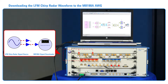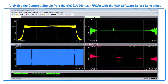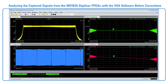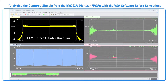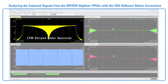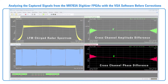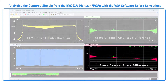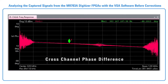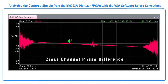An external RF power splitter is used to split the AWG output into two of the eight input channels of the M9703A Digitizer. This is the resulting signal measured with the Vector Signal Analysis, or VSA software, on the digitizer. The LFM Chirped Radar spectrum is shown on the upper left of the VSA display. The cross-channel amplitude difference between channels 1 and 2 is shown on the upper right, and the cross-channel phase difference is shown on the lower right. Notice that the amplitude and phase difference between channels 1 and 2 changes with frequency. This will be corrected using the reconfigurable FIRs implemented in the FPGAs.